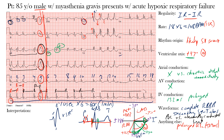Regarding R wave progression in the precordial leads: normally R wave amplitude should progressively increase from V1 through V5. However, with this abnormal conduction from the right bundle branch block, it's not always the most useful finding. Similarly, the transitional zone is highly dependent on lead placement, so keep that in mind when interpreting other EKGs.